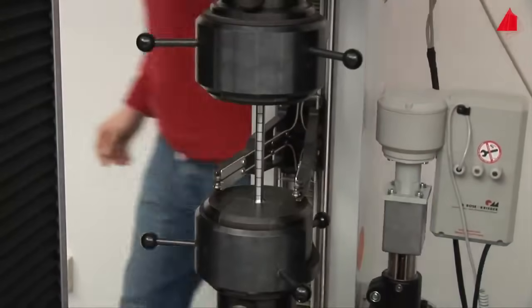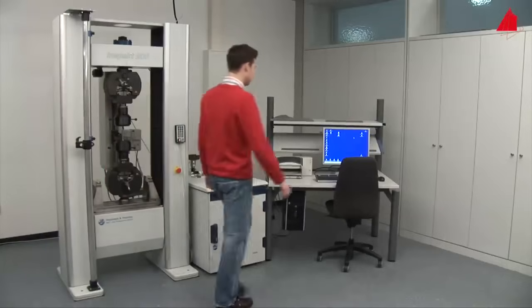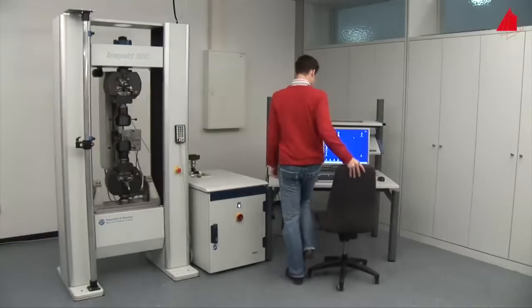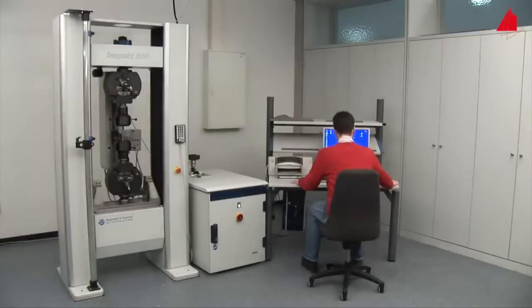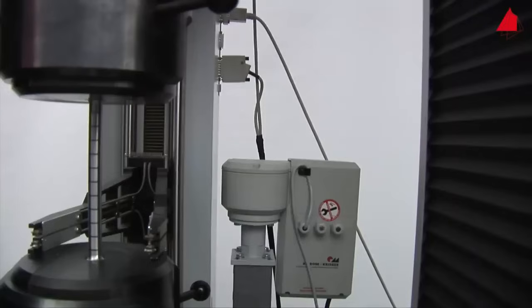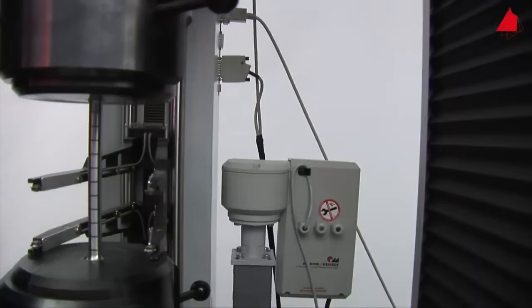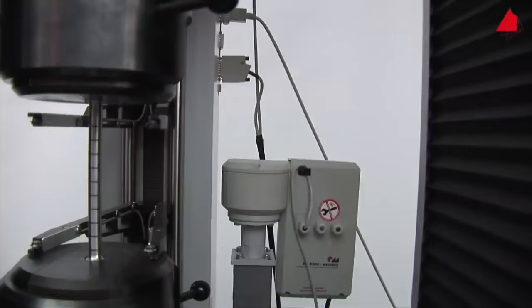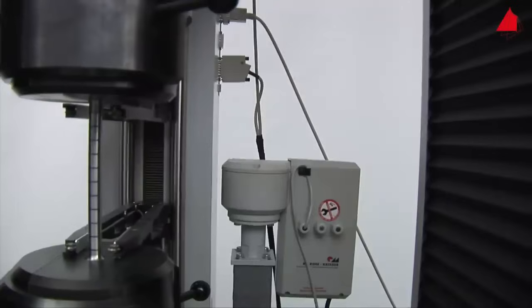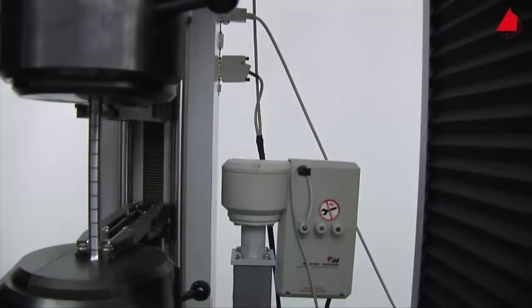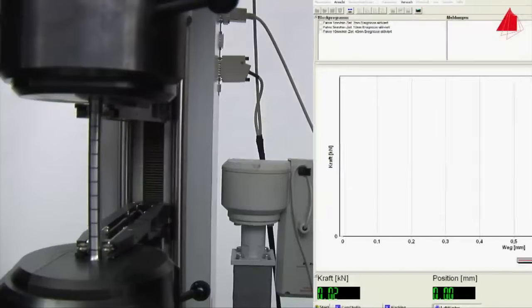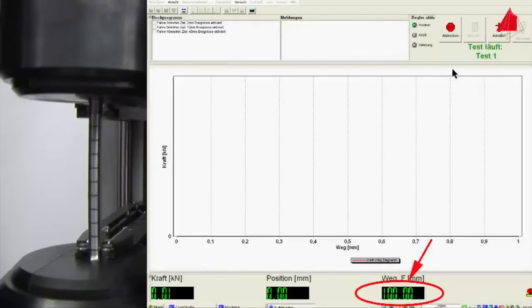Then he selects all necessary testing parameters on the control computer. Ready, the test starts and the extensometer sensor arms are carefully pressed onto the test piece. This way the gauge length can be measured throughout the whole tensile test. The gauge length is displayed at the bottom right hand corner of the screen. At the beginning it amounts to 100 millimeters.